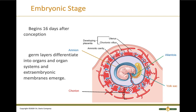The embryonic stage begins around 16 days and goes until week eight. The germ layers differentiate into organs and organ systems — all your organs are formed or at least started during this time. The extraembryonic membranes also emerge: the amnion becomes the amniotic sac filled with amniotic fluid, which cushions and warms the baby. The chorion is the outermost membrane and helps form the placenta. The allantois develops into the umbilical cord. The yolk sac produces the first blood cells, provides nutrients, and handles waste disposal until the placenta is formed.